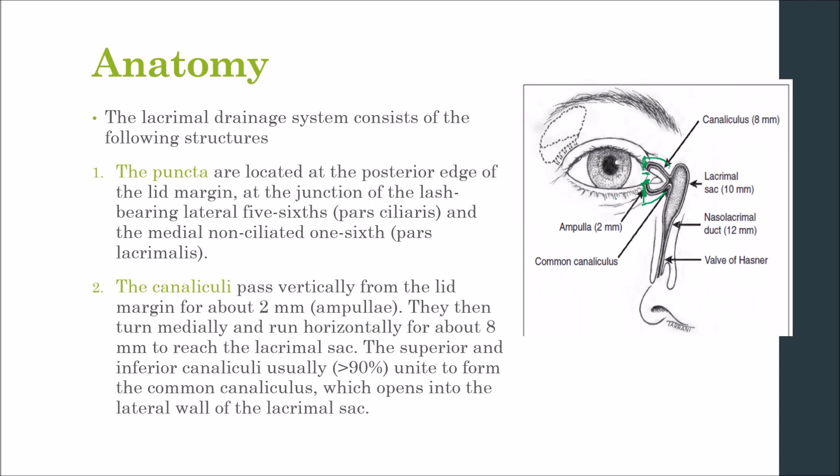The canaliculi reach the lacrimal sac, where the superior and inferior canaliculi — in more than 90% of cases — unite to form the common canaliculus, which opens into the lateral wall of the lacrimal sac. Uncommonly, each canaliculus opens separately into the sac. A small flap of mucosa called the valve of Rosenmuller overhangs the junction of the common canaliculus and the lacrimal sac.